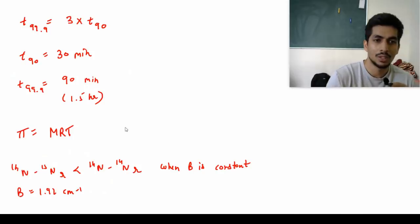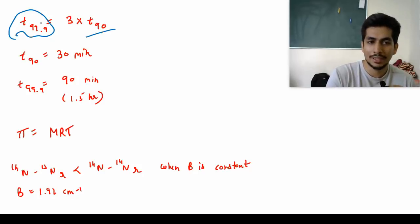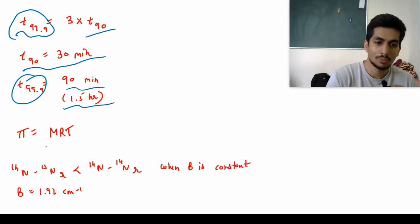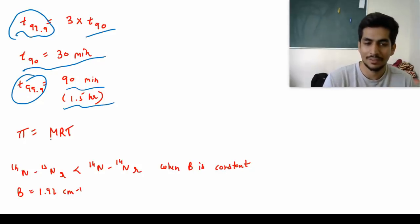There was a question that t99.9 you had to find for first order reaction and t90 was given to us. We have a simple formula: t99.9 = 3 × t90. So t90 was given as 30 minutes, so t99.9 = 90 minutes or one and a half hours. Then osmotic pressure question was there, something very simple. Just by using this formula you could have calculated.